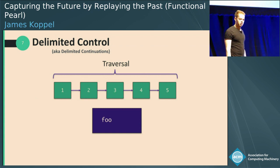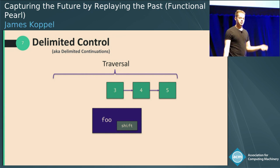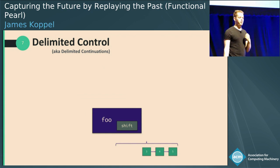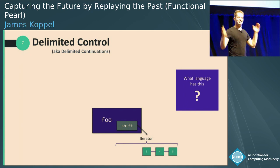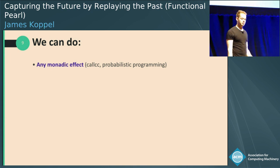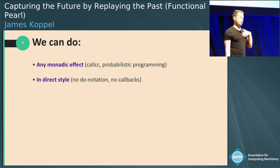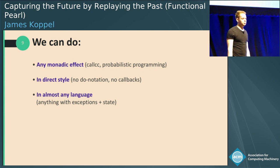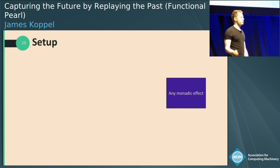We saw one application of it about 30 minutes ago in the last talk. But here's another one. If I have a traversal, this traversal calls some function foo with one and with two. And at some point, foo calls shift. That actually takes the traversal on the outside of this function and moves it to the inside. So now foo is in control of traversal, and this traversal has become an iterator. We can do any monadic effect — call CC, pausing programming — in direct style. We do not need to rewrite a program with callbacks, we do not need do notation. We can do this in any language with exceptions and state. But there are two catches, which I'll explain later.